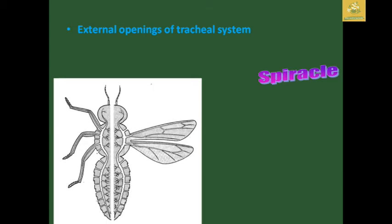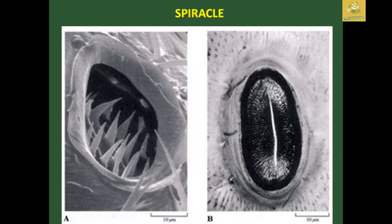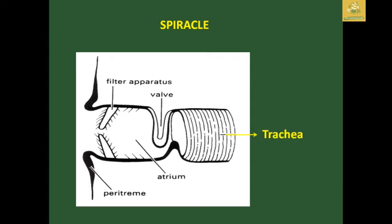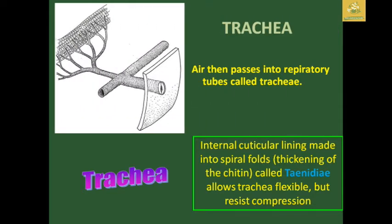This picture shows how the spiracles are opened in the insect body, including close-up and cross-sectional images of spiracles. The spiracles connect to the trachea through which oxygen is absorbed by the body. Air passes through the respiratory tubes known as trachea, which have an intracuticular lining made up of spiral folds — a thickening of chitin known as the taenidia compound — which keeps the trachea flexible but also resists compression.